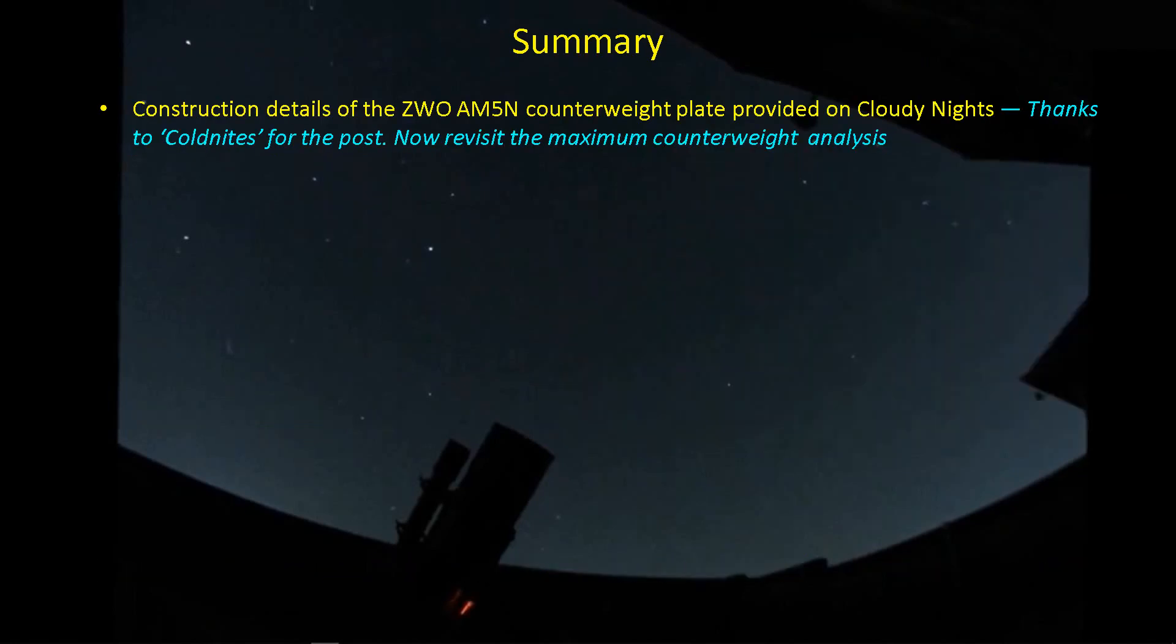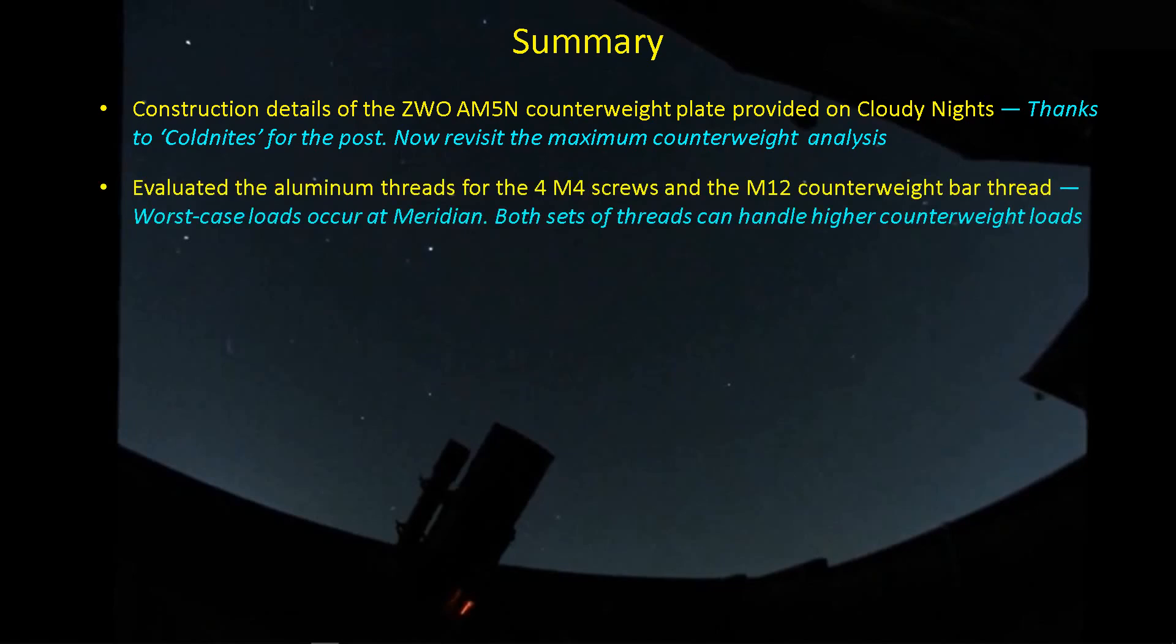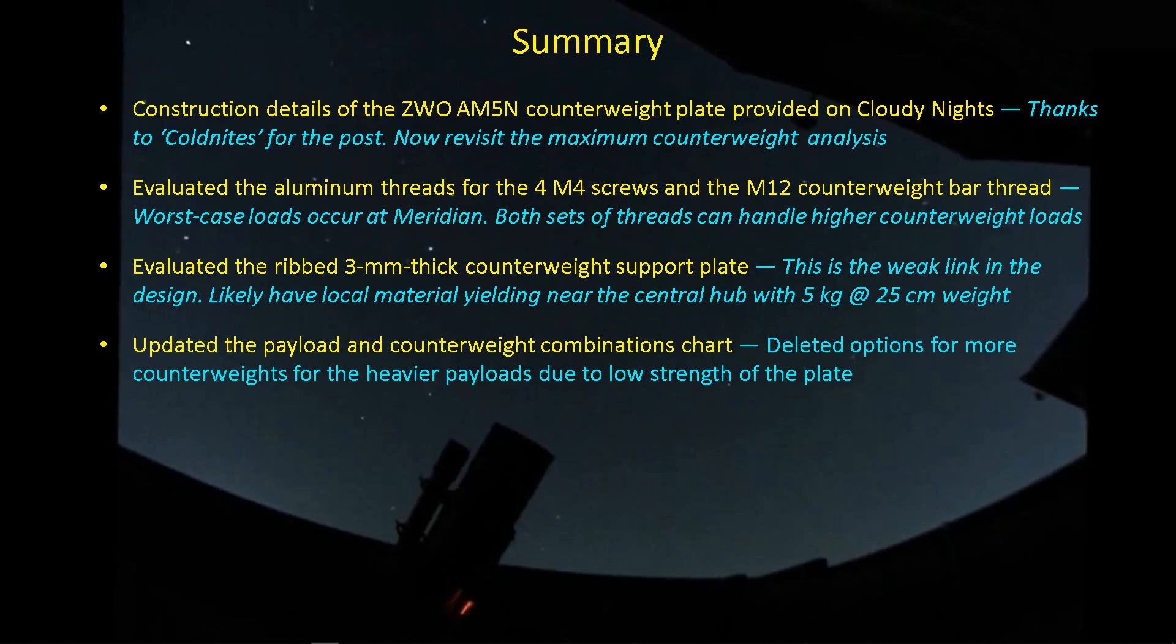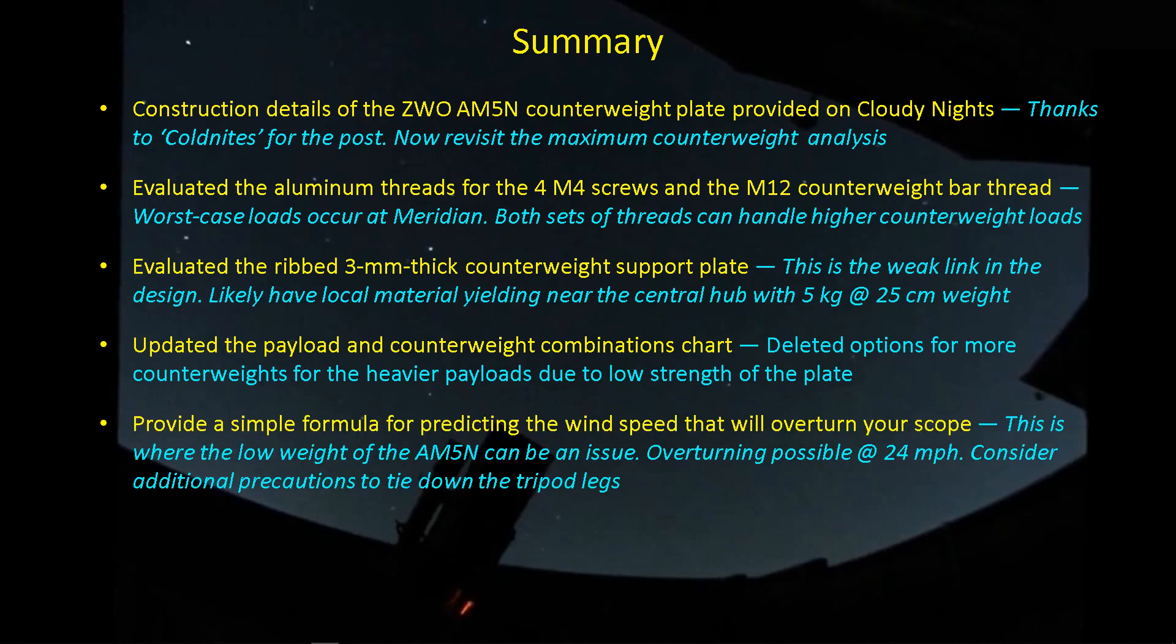Well, some great information about the ZWO AM5N counterweight support plate was posted on Cloudy Nights, so that allowed me to do some legitimate analysis of the plate to find out what its capabilities are. We first took a look at the threads, the M4 threads for the screws in the corners of the support plate and the M12 thread that supports the counterweight bar. In both cases, both threads can support a higher counterweight, depending on what aluminum alloy we're talking about. And then we took a look at the ribbed 3-millimeter thick counterweight support plate, and that's where the wheels come off. This is actually the weak link of the design and the big limiting factor for how much counterweight we can put onto the AM5N. It's highly likely that even with the 5 kilograms at 25 centimeters, we're getting some local yielding of the aluminum around that hub. In light of that information, I updated the payload and counterweight combination chart, kind of a graphical summary of ZWO specifications, and deleted the options for using more counterweights for heavier payloads due to that low strength of that plate.